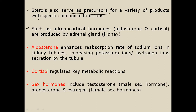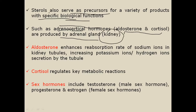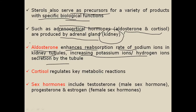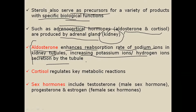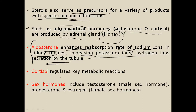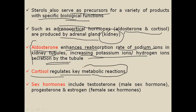Sterols also serve as precursors for a variety of products with specific biological functions, such as adrenocortical hormones. Examples include aldosterone and cortisol, which are produced by the adrenal glands present in the kidney. Aldosterone enhances the reabsorption rate of sodium ions in the kidney tubules and increases the secretion of potassium and hydrogen ions by the tubules. Cortisol regulates metabolic reactions occurring inside the body.